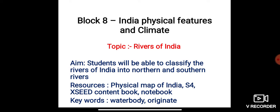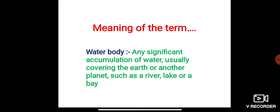Let's look into the meaning of those keywords. What is a water body? Any significant accumulation of water usually covering the earth or another planet, such as a river, lake, or a bay — it's called a water body. And originate means the place of origin, or the place where it came from.